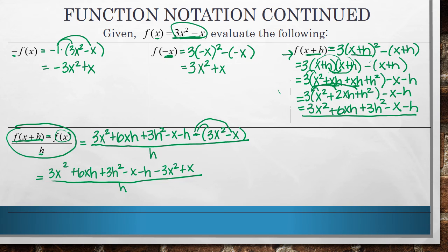Now looking at this, now that I have everything out of parentheses, I can see that I have a 3x squared minus a 3x squared, so those can cancel. I have a negative x plus an x, so those can also cancel.